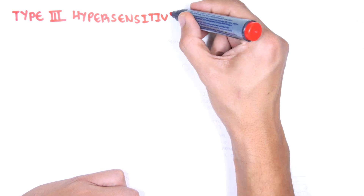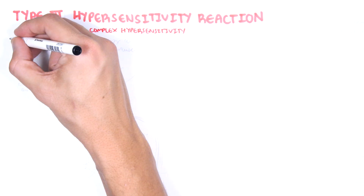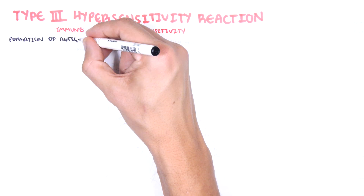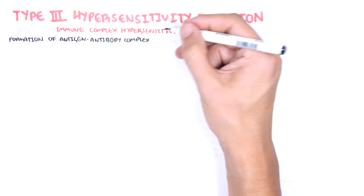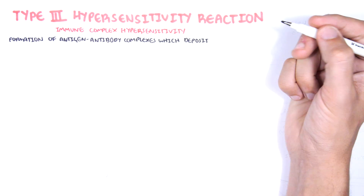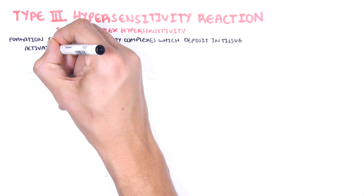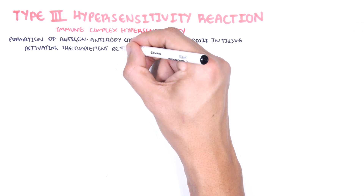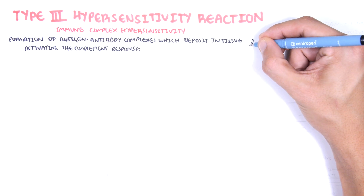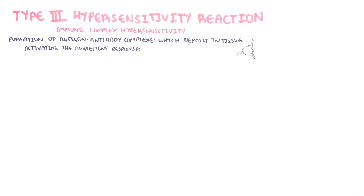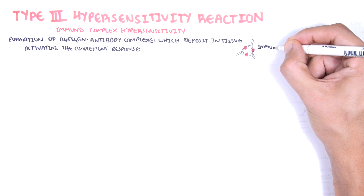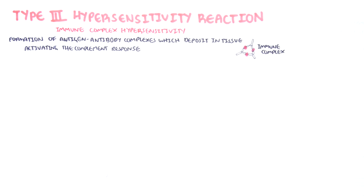Type 3 hypersensitivity, also known as immune-complex hypersensitivity reaction, is a reaction where formation of the antigen-antibody complex deposits in tissues, activating complement proteins and triggering the inflammatory response in the tissues. The antigen-antibody complexes are the immune complexes, and these circulate around the body. They can be cleared by macrophages normally in the spleen or liver.